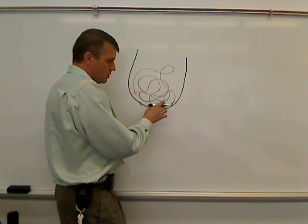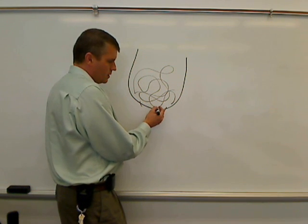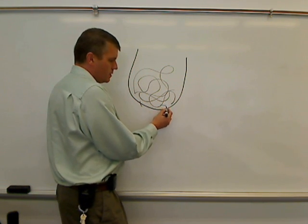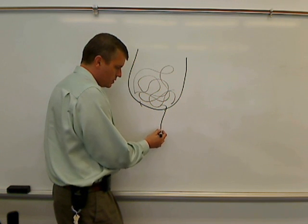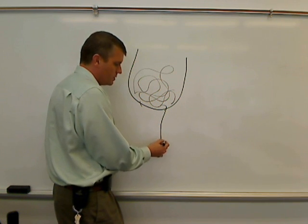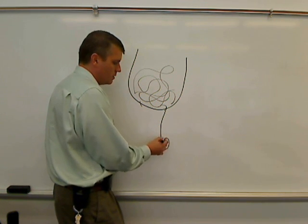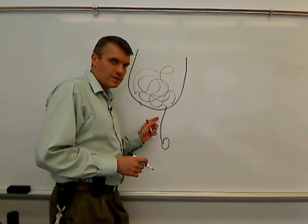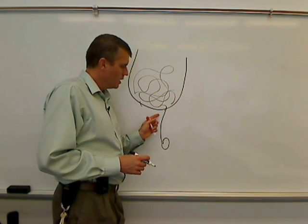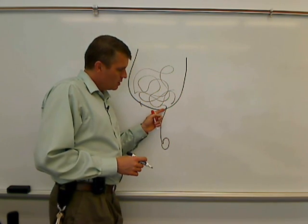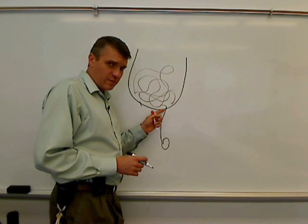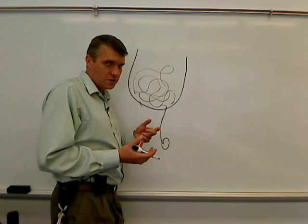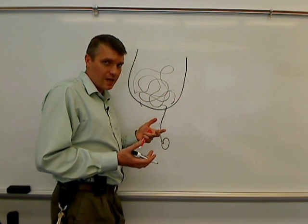Normally, through this inguinal canal is a tube that goes down to the male testicle. It's called the vas deferens. So this tube should only be large enough for the vas deferens to pass through. It shouldn't be any larger than that.